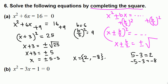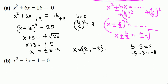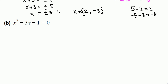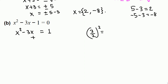Next question — similar approach. We want to keep x² − bx on the left-hand side, so we move −1 to the other side by adding 1 to both sides, giving x² − 3x = 1. To make the left side a perfect square, b = 3, so we add (3/2)² = 9/4 to both sides.